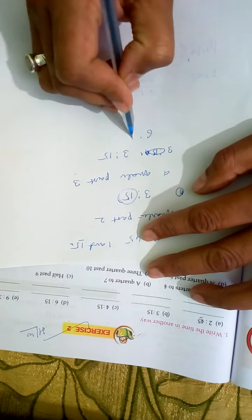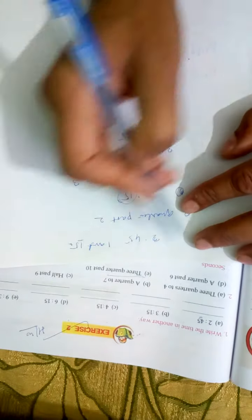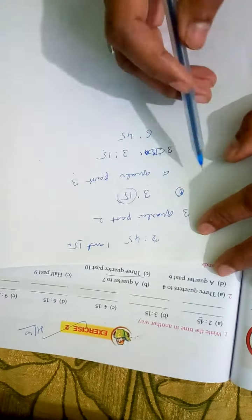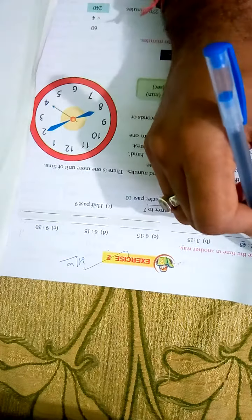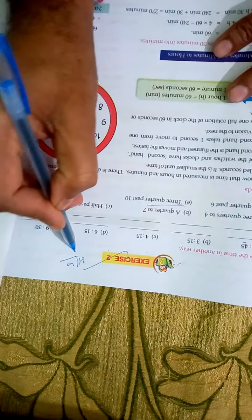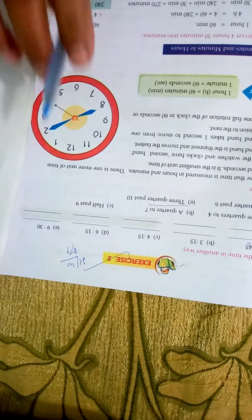So this is the small one. Chapters 1 and 2, you have to do as homework, okay, in your copies.